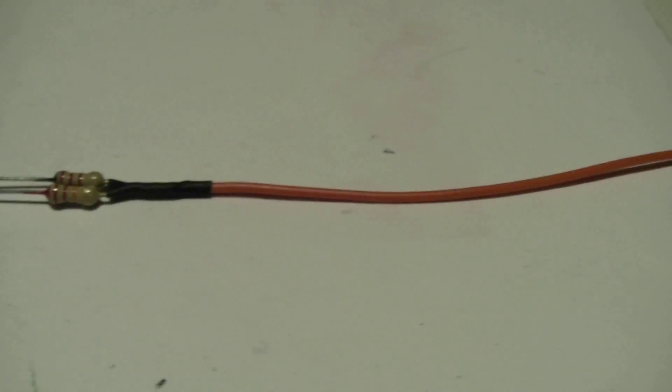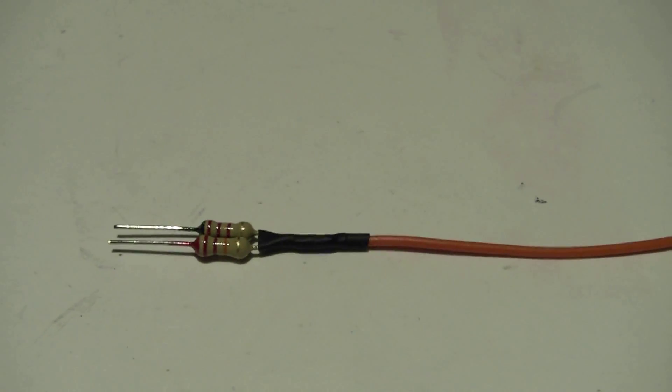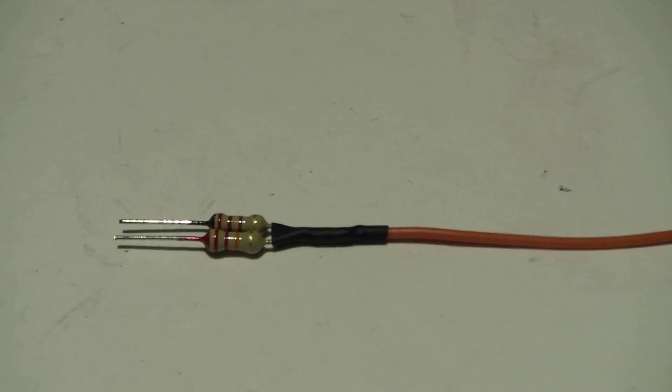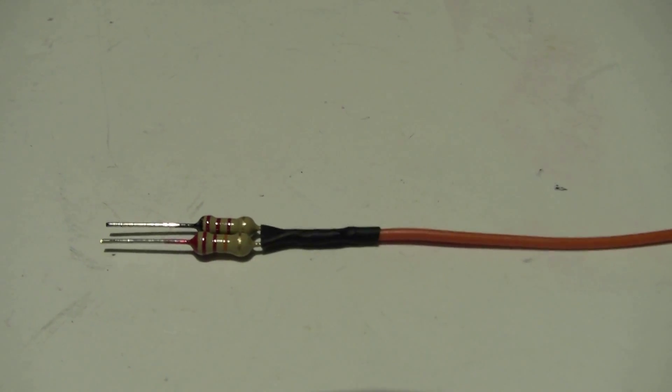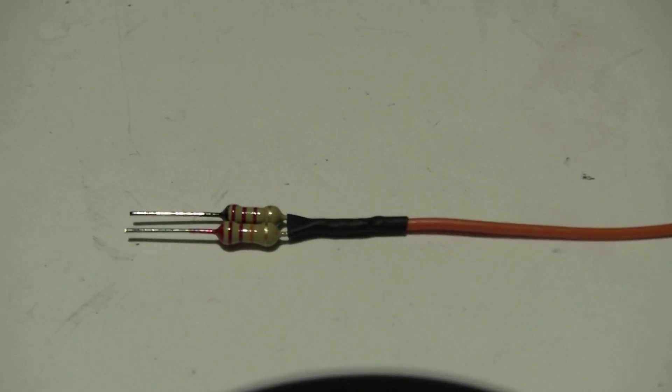So the next step is to solder a fly lead on the sensing side where you've just joined the two resistors. And obviously heat shrink, but I will heat shrink the whole thing when I've finished it.